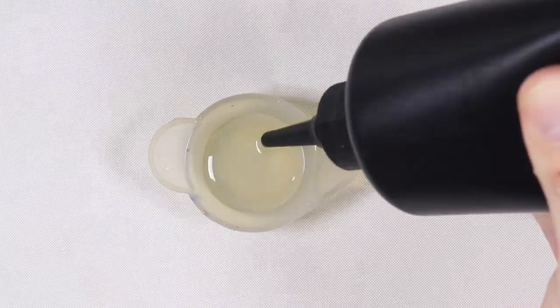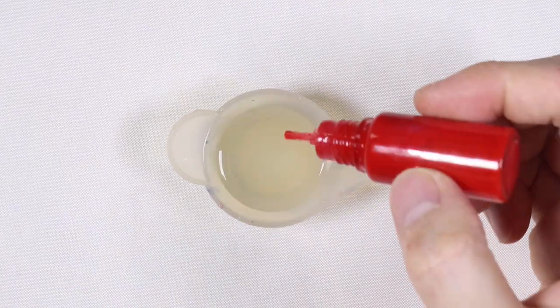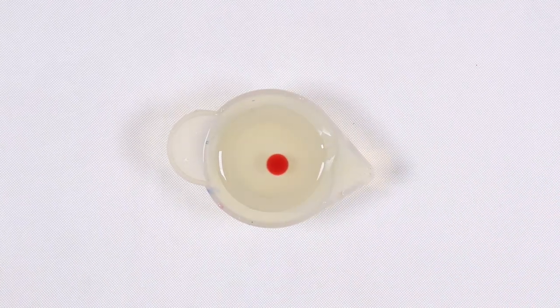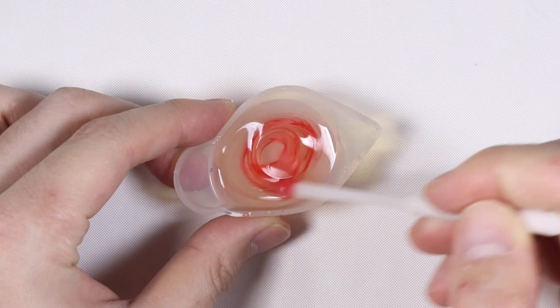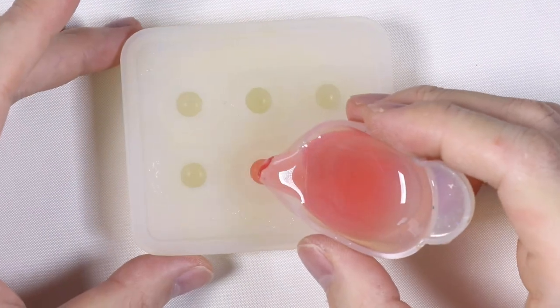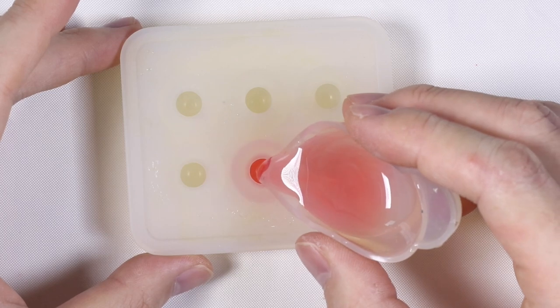So first I'm just taking some resin, and I'm going to make the apple color, so I'm adding a little bit of red pigment. And mix the pigment together with the resin, and then I'm going to pour it into this circle or sphere mold that I have.